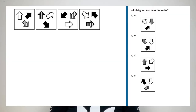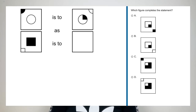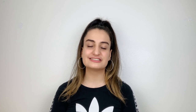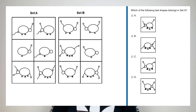Type 2 questions are when you'll be presented with a series of shapes and asked to select the next shape in the series. For type 3 questions, you'll be presented with a statement involving a group of shapes and asked to determine which shape completes the statement. And finally, for type 4 questions, you'll be presented with two sets of shapes labelled set A and set B, and asked to select which of the four response options belong to set A or set B.